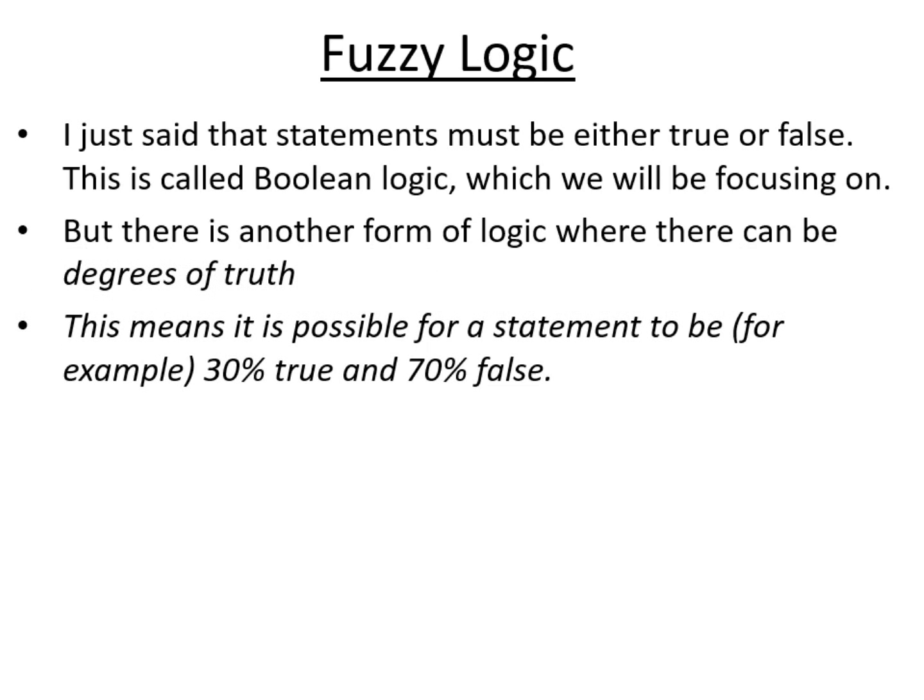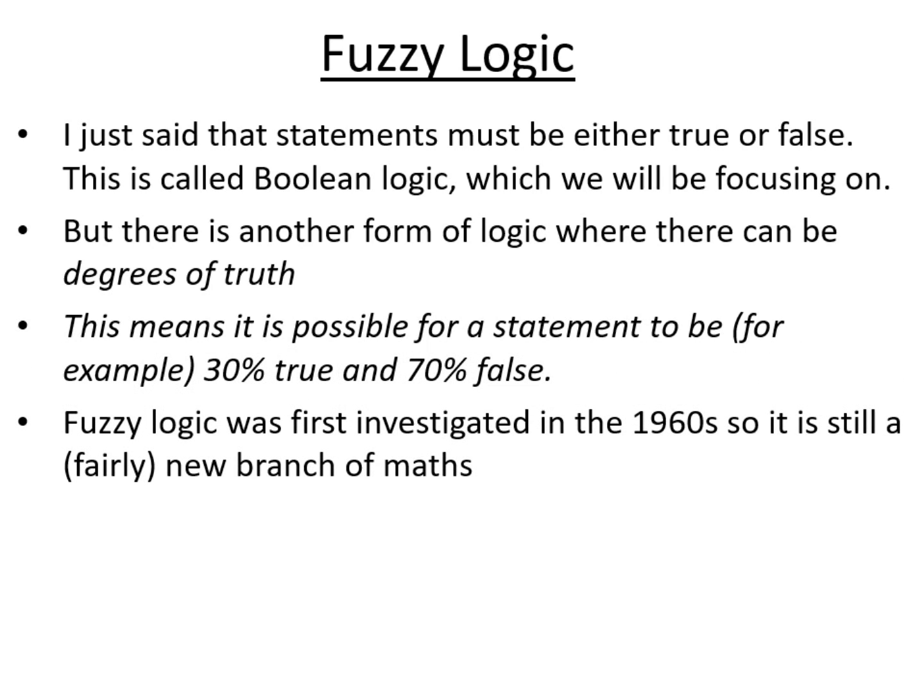But there is another form of logic where there can be degrees of truth. So for example, a statement might be, let's say, 30% true and 70% false. So this was first investigated in the 1960s, and so it's still relatively new in mathematics. It hasn't been fully explored, but we're learning more about it all the time.